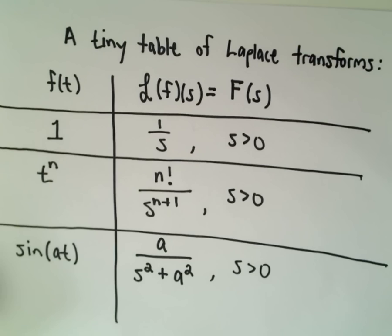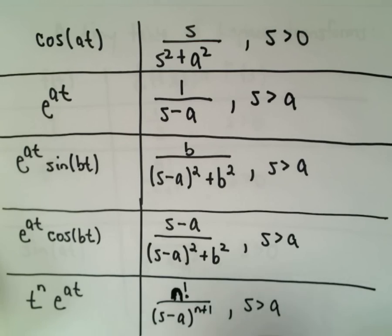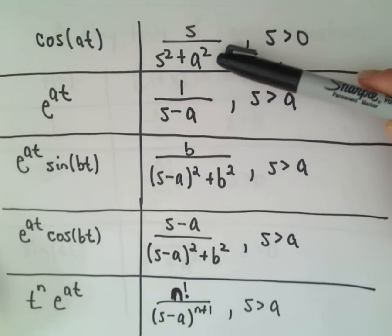Again, a lot of these are just justified straight using the definition. If you have cosine of a t, you get s over s squared plus a squared.